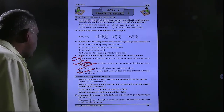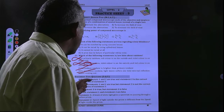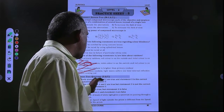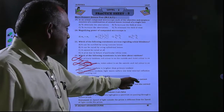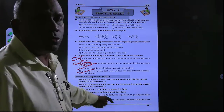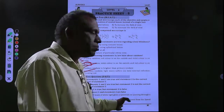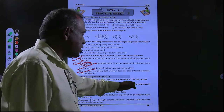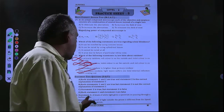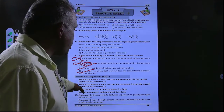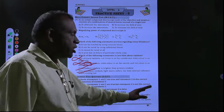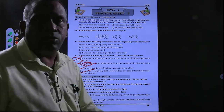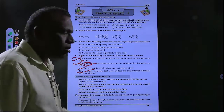Now come to the statement type questions. In statement type questions the options are: option A — both statements are correct and statement 2 is the correct explanation of statement 1; option B — both statements are correct but statement 2 is not the correct explanation of statement 1; option C — statement 1 is true and statement 2 is false; option D — both statements 1 and 2 are false.